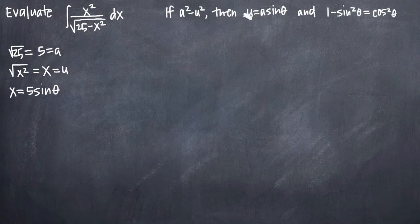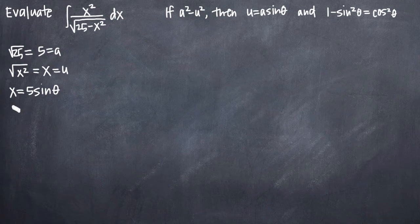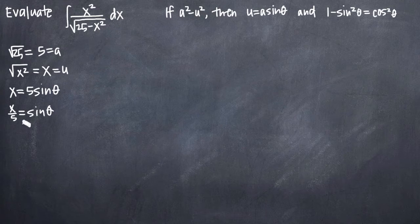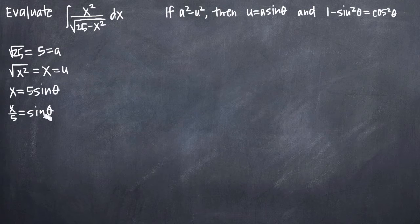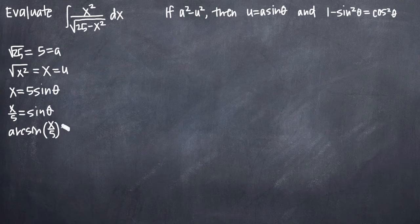You always want to plug u and a into your substitution, and then solve for a couple more things before substituting into the integral. The first thing you want to do is divide both sides by 5 to solve for sine of theta, so we'll get x divided by 5 equals sine of theta. From here, you also want to solve for theta by taking arcsine of both sides. Arcsine of sine cancels, leaving only theta, so arcsine of x over 5 is equal to theta.